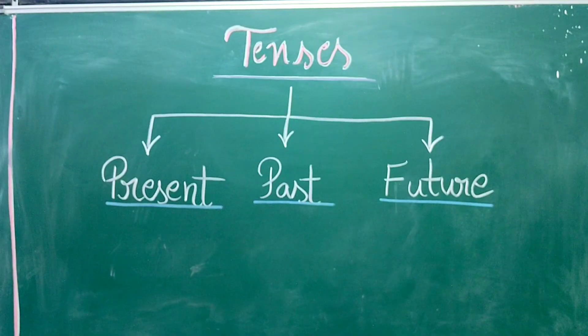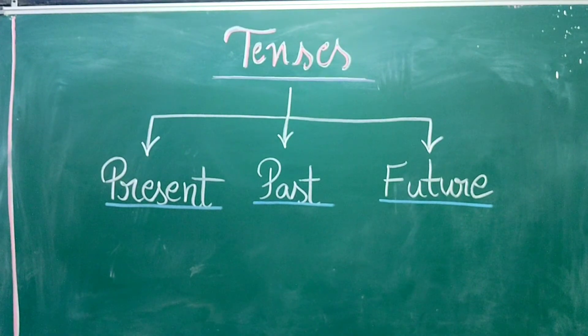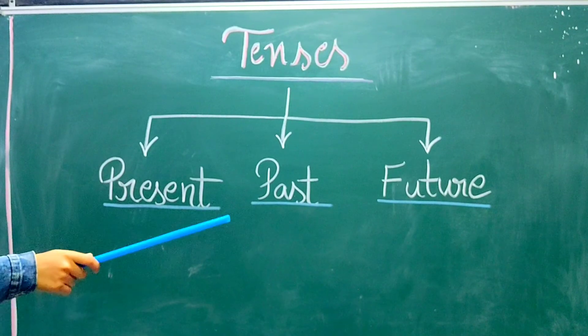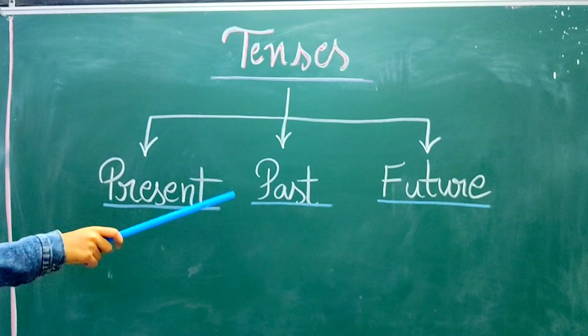So in short, we can simply say, the time of action shown by the verb is called tense. Now I will be explaining you the three tenses. That is present, past and future.